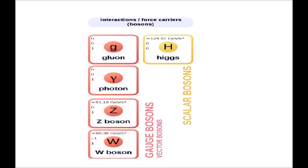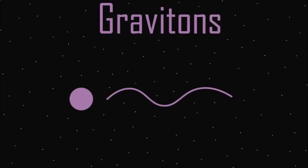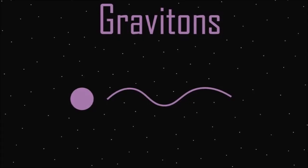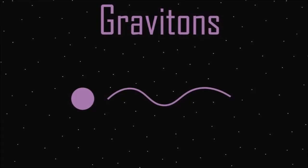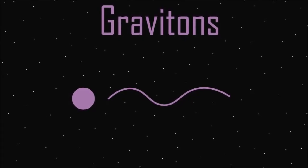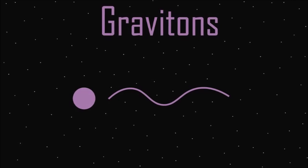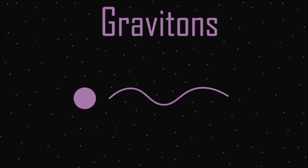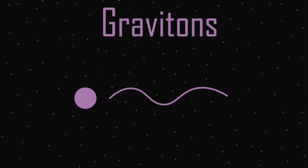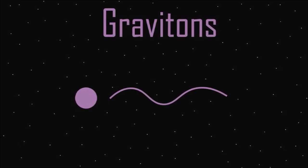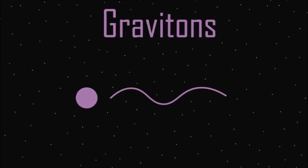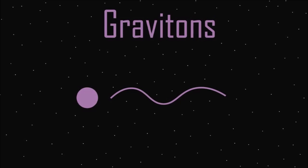The Z boson and W boson are one type. This series is also known to include the graviton, but graviton is hypothetical, so we can add this to the chart in the series.